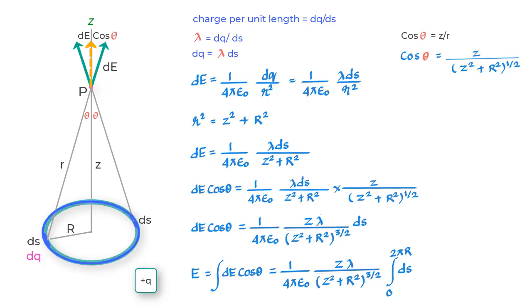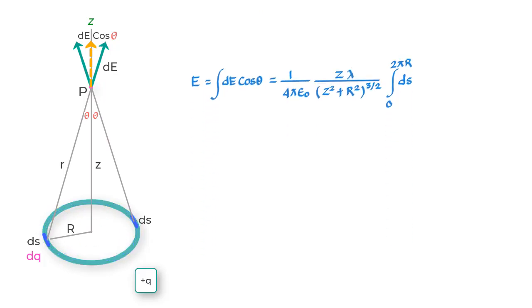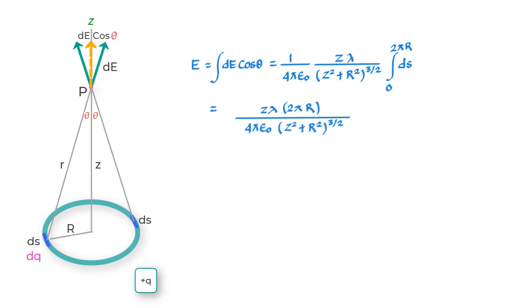Now if you integrate this what you get is this expression. But then we can say that lambda can also be written as total charge on the ring divided by the total length.